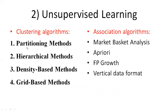Clustering methods include: partitioning clustering methods such as K-means and K-medoid; hierarchical clustering methods using bottom-up or top-down approaches; density-based clustering methods such as DBSCAN; and grid-based clustering methods. For association, scalable association algorithms include the Apriori algorithm, FP-growth algorithm, and vertical data format. These are all unsupervised methods.